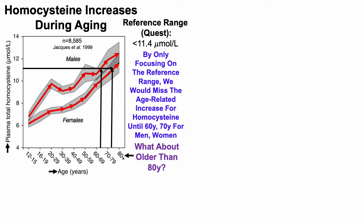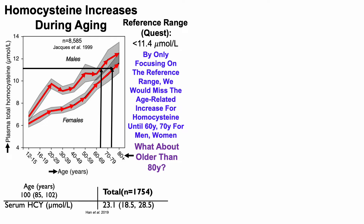What about older than 80 years? How does homocysteine look in people that are older than 80? Here we're looking at a study of more than 1,700 centenarians — people that had a median age of 100 years. And here we can see that serum HCY, so serum levels of homocysteine, were 23.1 micromolar, which would be even further off the chart when compared with the data just presented.